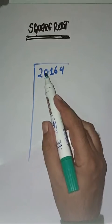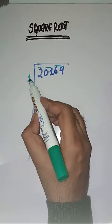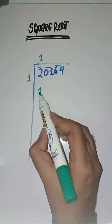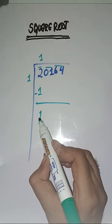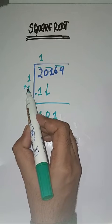So 1 ones are 1, minus, what do we have? 1. Next pair is 01. What will we do? We'll write it below. Here we'll do 1 plus 1 which is equal to 2.